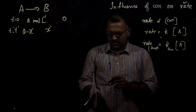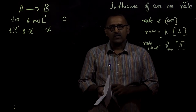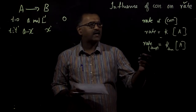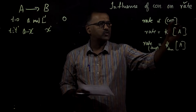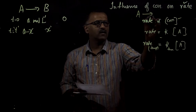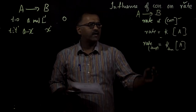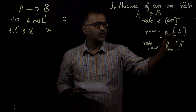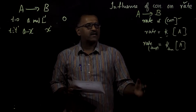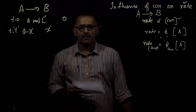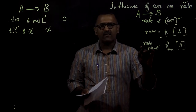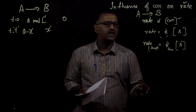Hi friends, today we will be discussing the influence of concentration on rate of reactants. As we discussed in the last lecture, rate is proportional to concentration, and for a general reaction A giving B, we can write rate equals rate constant K multiplied by concentration of A. The rate is not always constant; it should be specified at the particular temperature at which the experiment is conducted.